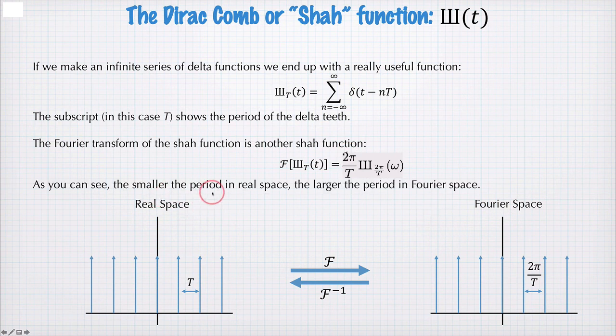And as you can see, the smaller the period in real space, so the shorter T becomes, then the larger the period in Fourier space. So smaller t gives wider spacing in the Fourier domain.